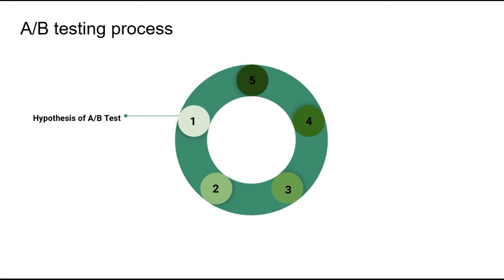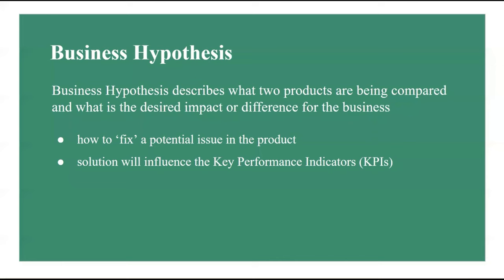As we saw in the previous lecture, the first step in conducting A/B testing is stating the hypothesis of the A/B test. This process includes coming up with a business and statistical hypothesis you would like to test, including how you measure success — the primary metric. First we need to state the business hypothesis. From a business perspective, the business hypothesis describes what the two products being compared are and what is the desired impact for the business — how to fix a potential issue in the product where a solution will influence the key performance indicator, the KPI of interest.